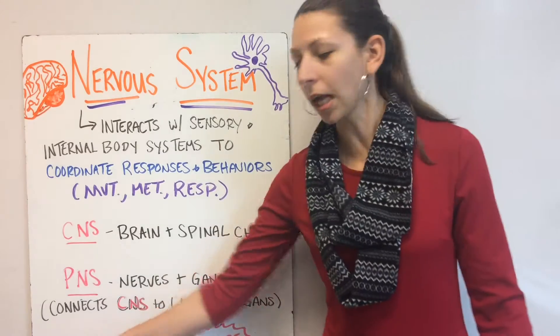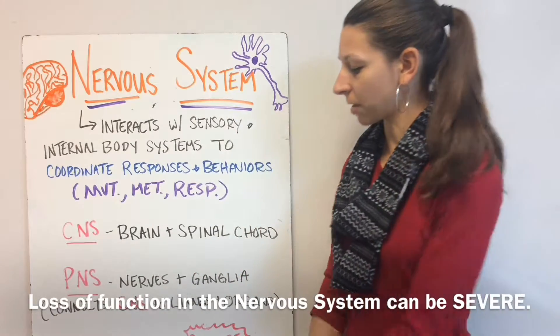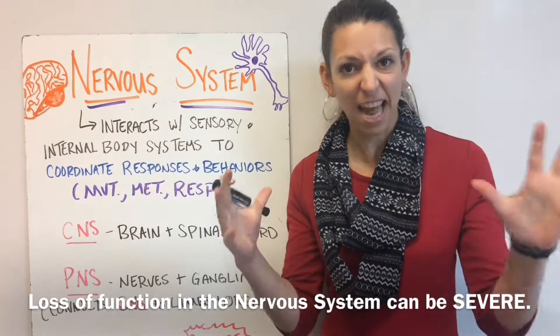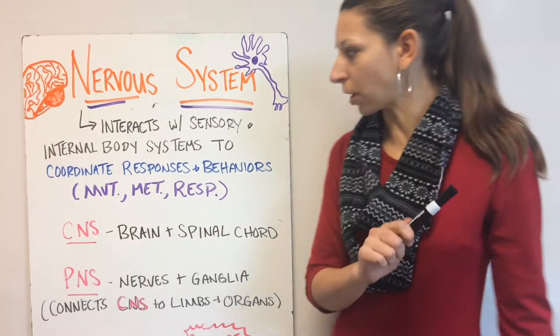If you have a loss of function of your nervous system, it can be very severe, including change in behavior, loss of bodily functions, or even death. The nervous system is very important.